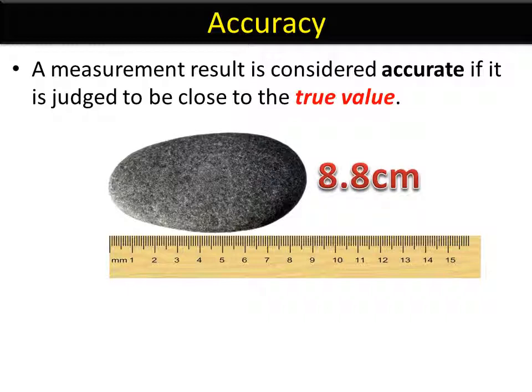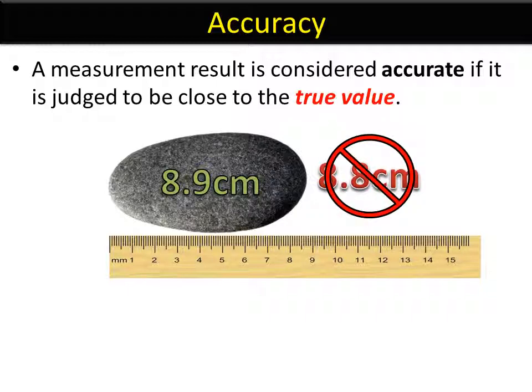The thing that will reduce accuracy is errors. So if you make a mistake measuring it, and you measure 8.8, whereas the true value is 8.9 centimeters, then your result is slightly inaccurate.